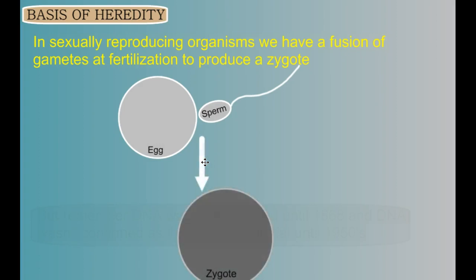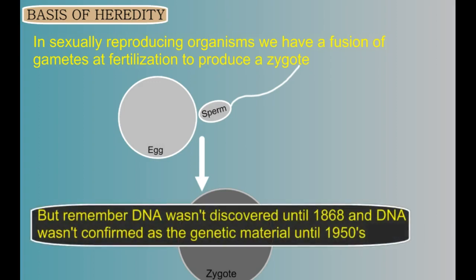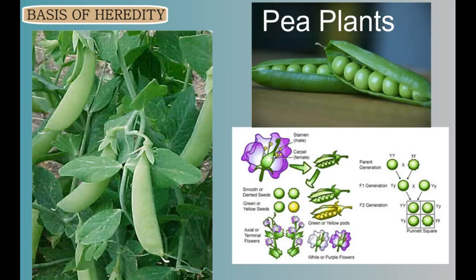Sexual reproduction was understood, and that there must be a combining of gametes to ensure the next generation, but the underlying mechanism was not known. Remember, while you may understand meiosis as the process to produce gametes and DNA as the physical carrier of the genetic code, people in Mendel's time did not have direct knowledge of the cellular and chemical processes involved — and that's what makes Mendel's work so impressive.